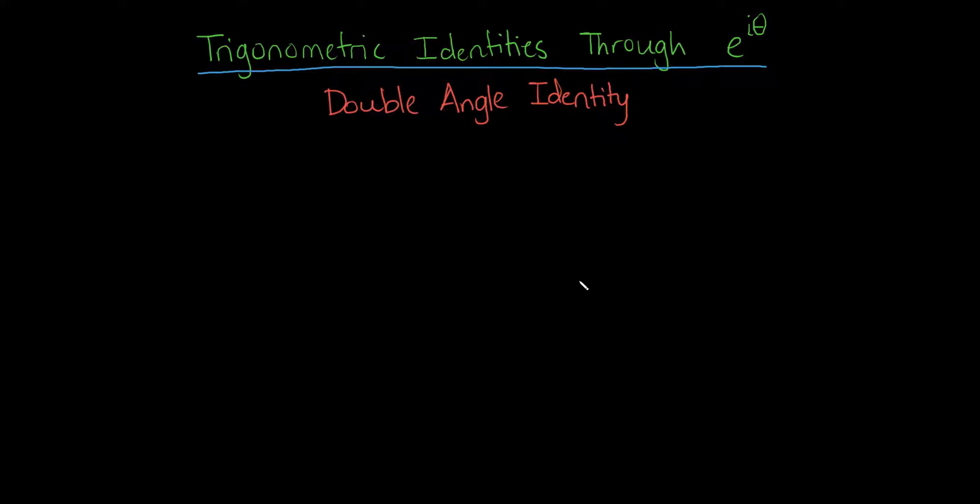What I want to show you in the next series of videos is how we can derive the trigonometric identities all with this simple and quite beautiful and amazing formula: e to the i times an angle theta equals the cosine of theta plus i times the sine of theta.